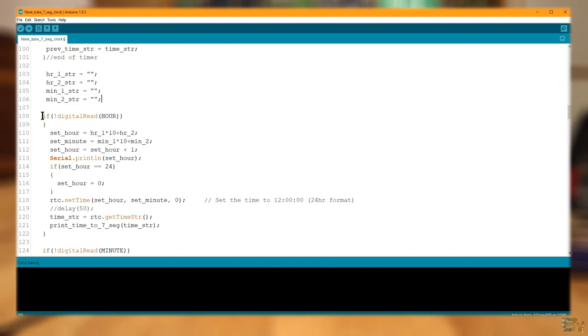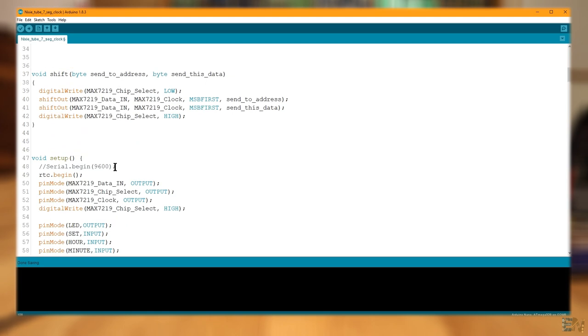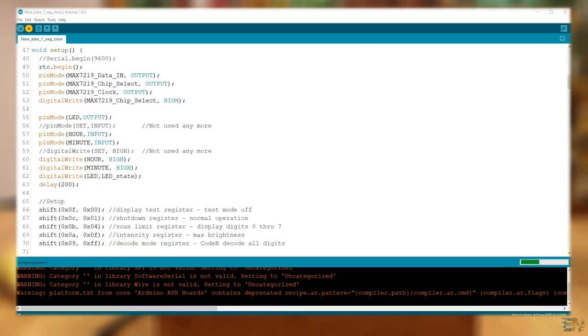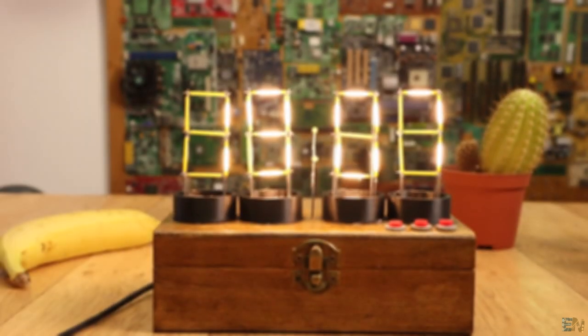Each time we press one of the buttons, a set time loop will be activated. Read all the comments in the code, line by line, to understand more. Upload this code and let's test it.